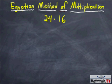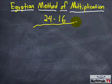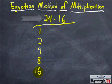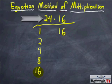So what we're going to do is 24 times 16, right there. On the left side, we're going to use something like binary code and each time we're going to double that number. So it would be 1, 2, 4, 8, and 16. We stop at 16 because 16 doubled is 32, and 32 is higher than 24, so we don't want to go that far.